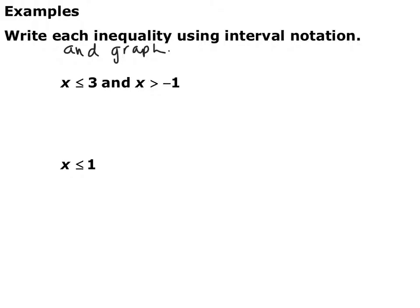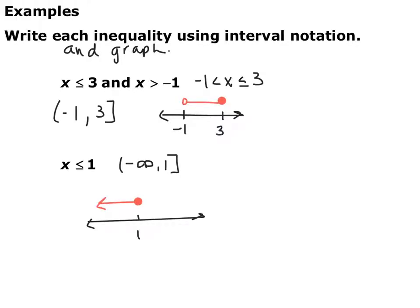Here are two examples — write the inequality in interval notation and graph them. For the first one, x ≤ 3 and x > -1 is the same as -1 < x ≤ 3. So the interval notation is (-1, 3], and the graph has an open circle on negative 1, a closed circle on positive 3, with all x-values in between shaded.